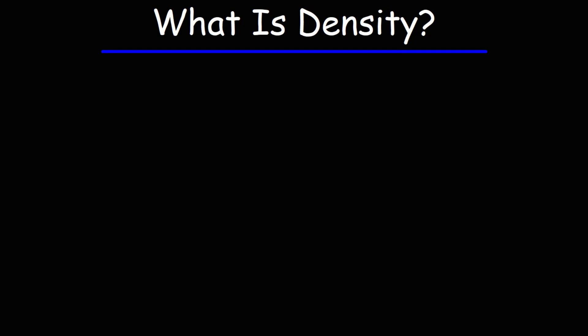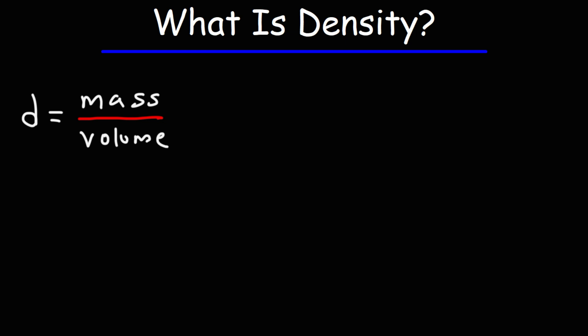What is density? When you hear the word density, what do you think of? Density is a ratio between mass and volume. You could think of it as a type of concentration — how concentrated mass is in a given space. So if you have a lot of mass in a small region of space, you have a situation with high density.